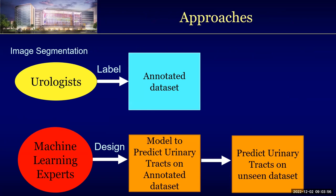For image segmentation, machine learning experts and urologists take different approaches. To generate segmentation labels for urinary tracts, urologists manually review and label the organs of interest in the scans to generate an annotated dataset. Machine learning experts then design a deep learning model based on that annotated dataset to predict the urinary tracts, which is then applied to any unseen dataset.